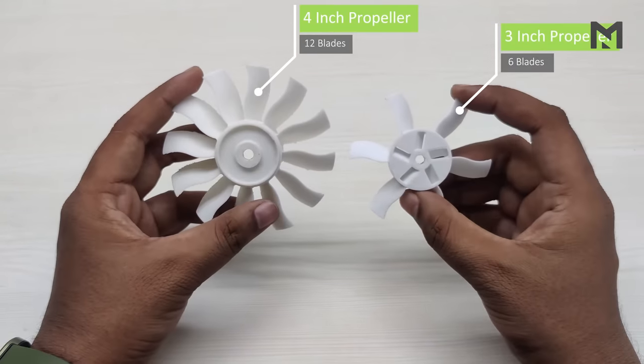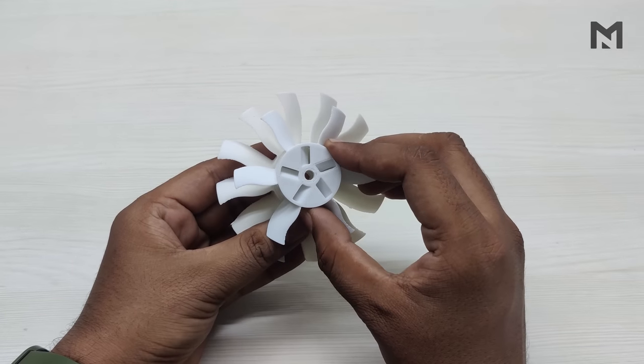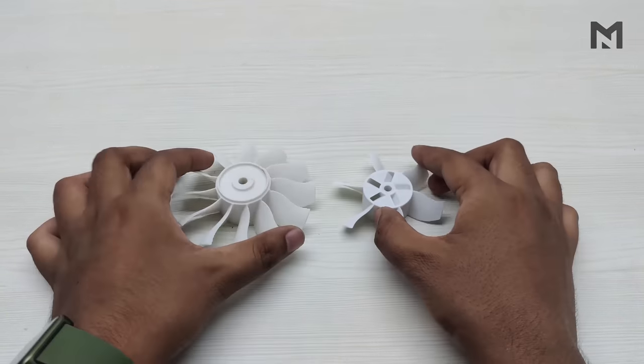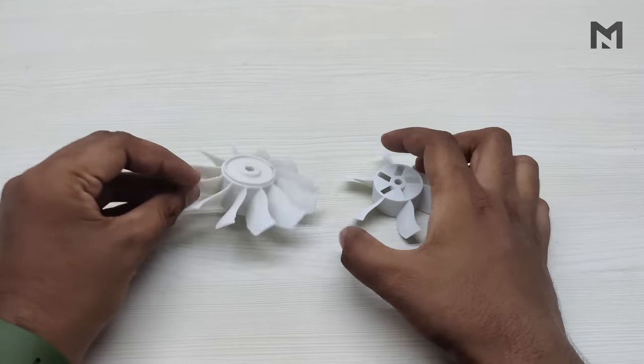On comparing it with the four-inch propeller, it has a reduction of 12mm on all sides. This four-inch propeller has thicker blades than the three-inch propeller has.